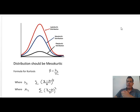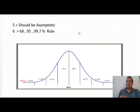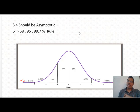Now let's discuss the fifth and sixth properties. Asymptotic means that your graph will touch the axis at infinity. This property is normally not checked by people, but it is actually a property that your graph should be touching the axis at infinity. And then we have the 68, 95, and 99.7 percent rule: around 68 percent of the data within one standard deviation, around 95 percent within two standard deviations or 1.965 standard deviations, and within three standard deviations there should be around 99.7 percent of the data.